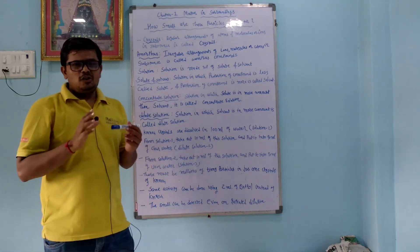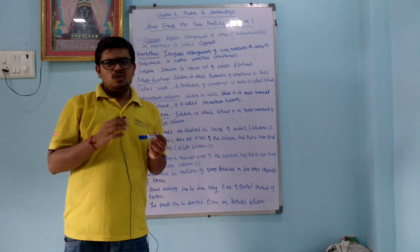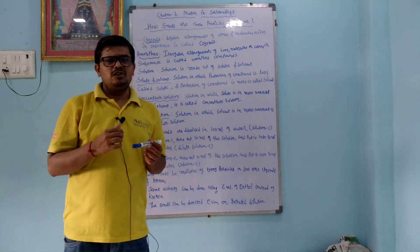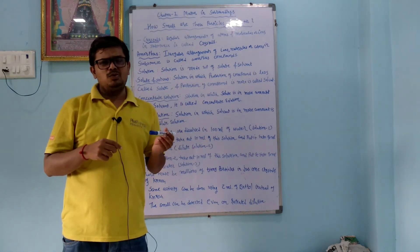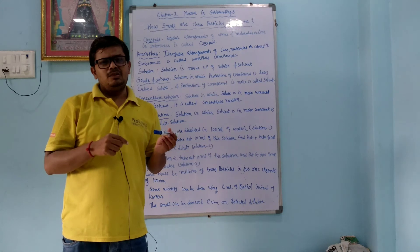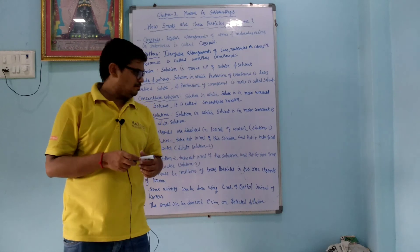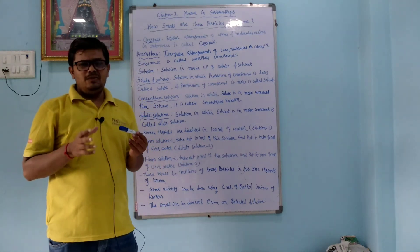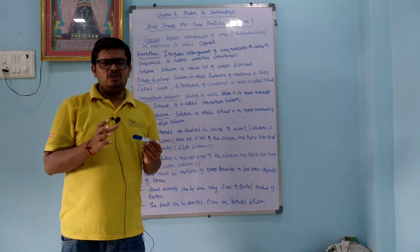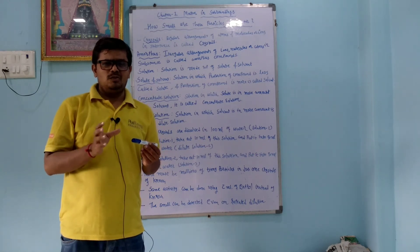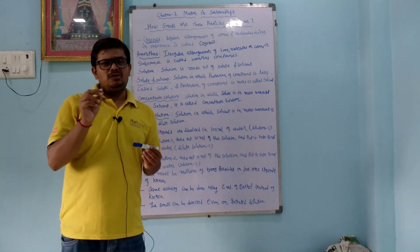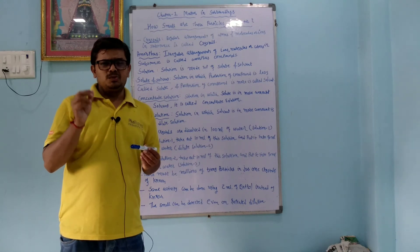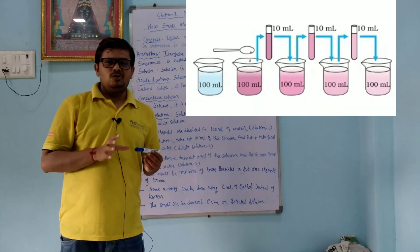A concentrated solution is one in which the amount of solute is more compared to solvent — for instance, when we keep adding sugar to water until no more dissolves. A dilute solution is one in which the concentration of solute is less compared to the solvent — for example, adding just two or three crystals of sugar to water.